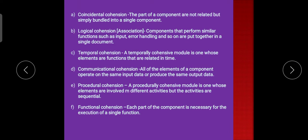Coincidental cohesion: the parts of a component are not related but simply bundled into a single component. Logical cohesion or association: components that perform similar functions such as input, error handling, and so on are put together in a single document.